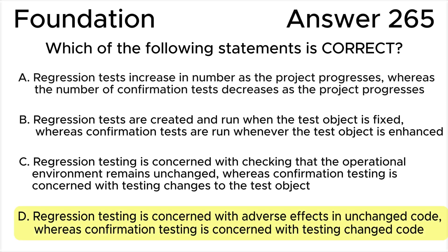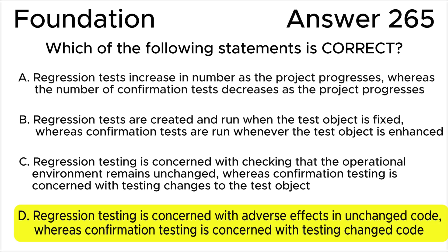The correct answer is D. Regression testing ensures that changes do not have negative effects on unchanged software. Confirmation testing is concerned with changed code. According to the ISTQB glossary, all the rest of the answers are wrong.